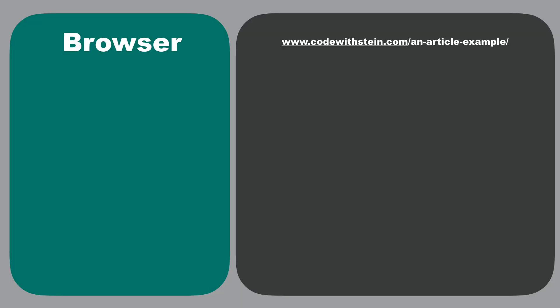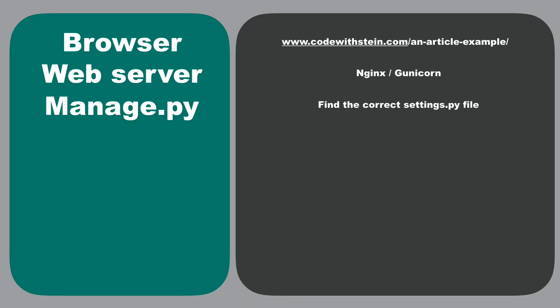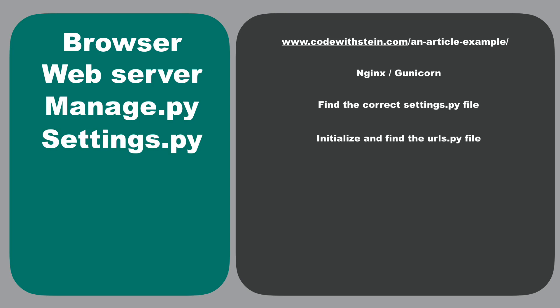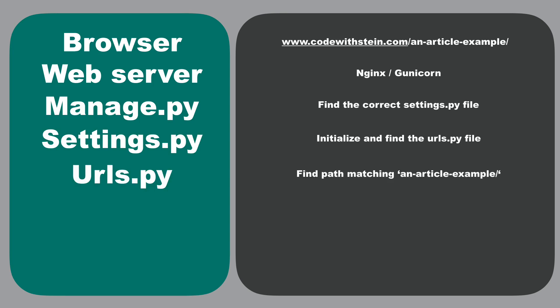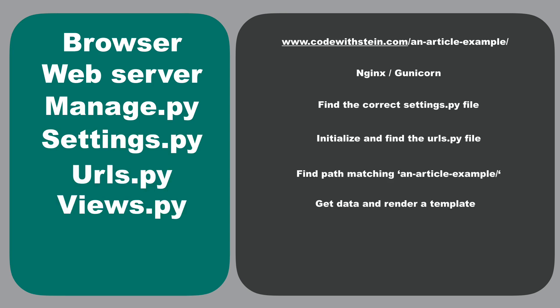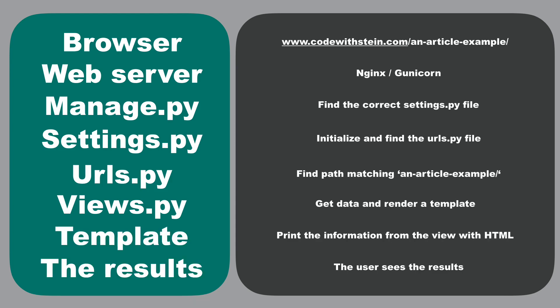Then we use the render function for showing the HTML in the browser. So in a few words, the flow will be like this: the browser sends to the web server, which sends to manage.py, which goes into settings.py, into urls.py, into views.py, and then the template. And then you will see the result.